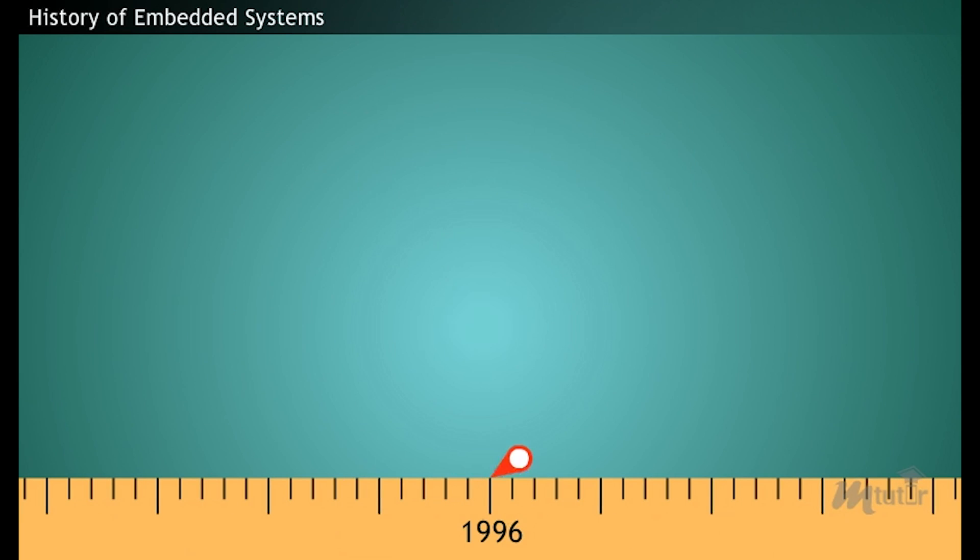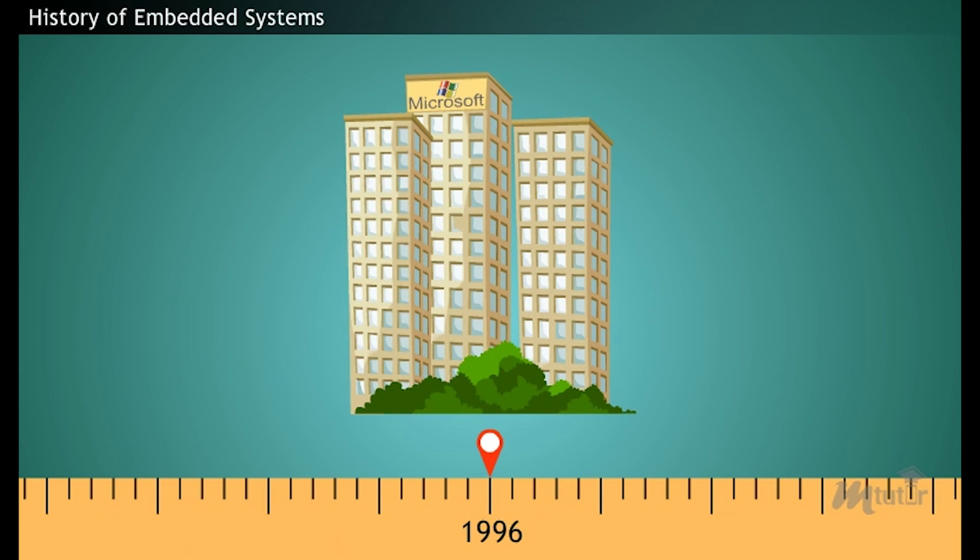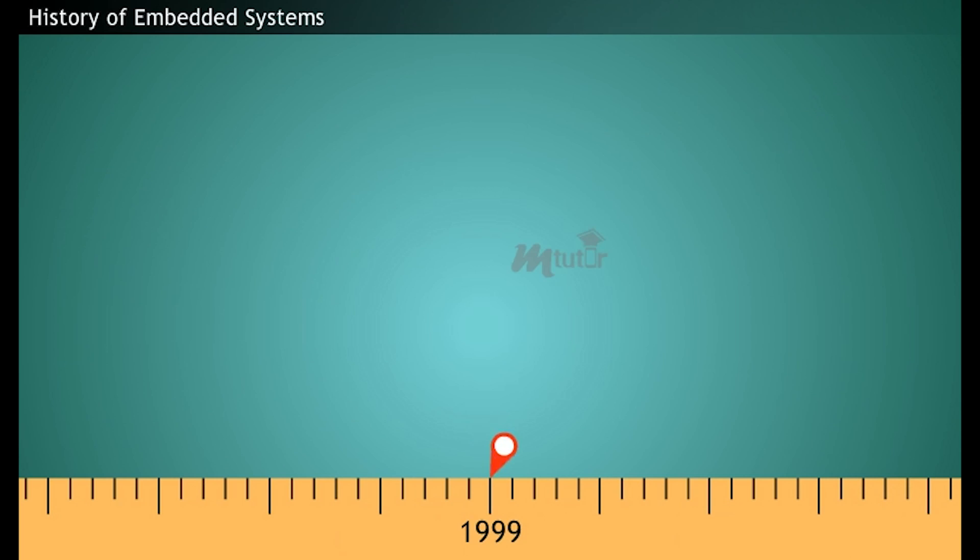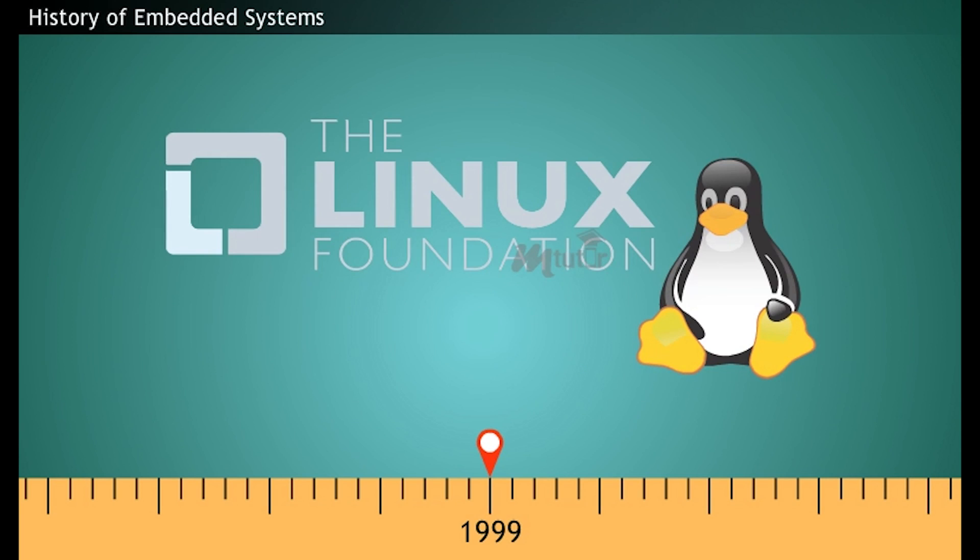In 1996, the renowned software giant Microsoft entered into the embedded market and designed its handheld personal computer using Windows CE 1.0 operating system. Following with Windows OS, in 1999, the Linux Foundation started to develop its roots in the embedded system.